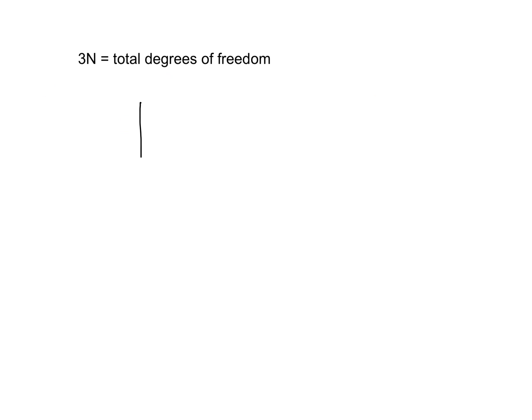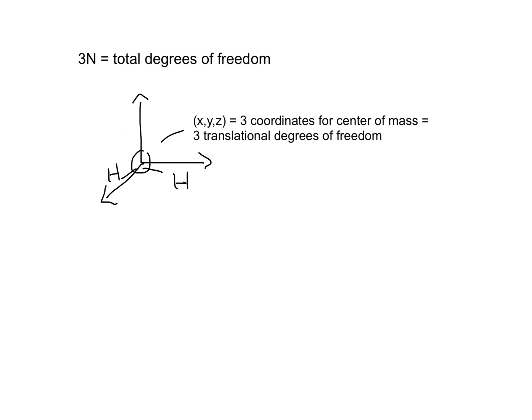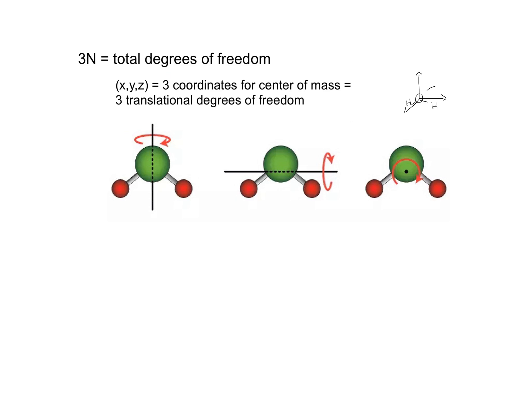The center of mass of my water molecule can be described with three coordinates: x, y, and z. Since it takes three coordinates to describe where the center of mass is at any time, there are three translational degrees of freedom. There are three axes of rotation for the water molecule, shown here, and therefore there are three rotational degrees of freedom.